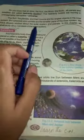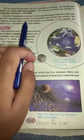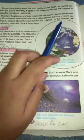The Sun, the planets and their moons are the largest objects in the solar system, but asteroids and comets are the smaller parts of the solar system.